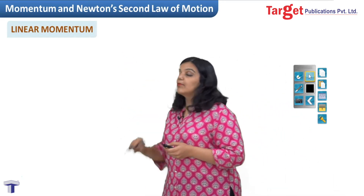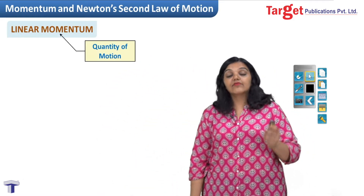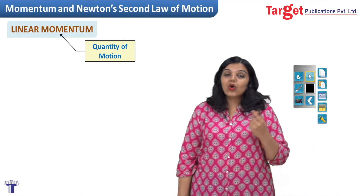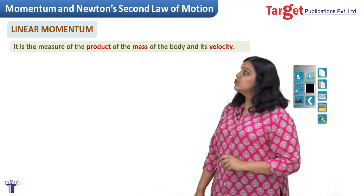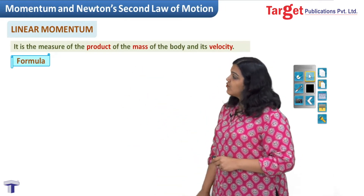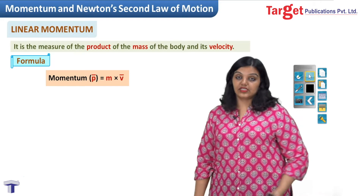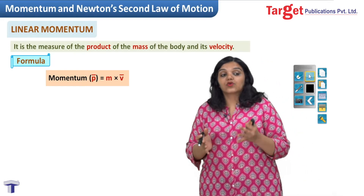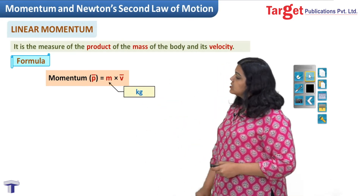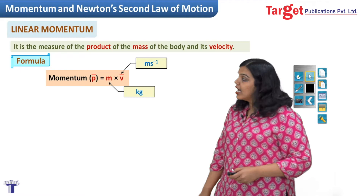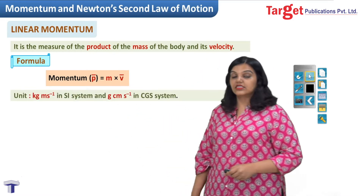In particular, we will be looking at linear momentum. Linear of course means straight line, and momentum means quantity of motion — so we are looking at the straight-line quantity of motion. Linear momentum is defined as the product of the mass of the body and the velocity of the body. The formula is: linear momentum p = m × v, where m is mass and v is velocity. The unit of momentum is kg·m/s in SI units, and gram·cm/s in the CGS system.